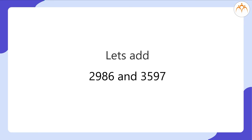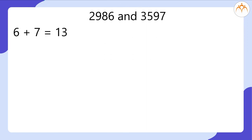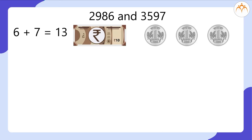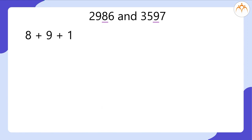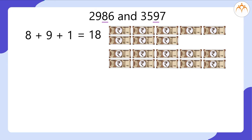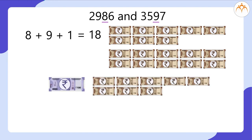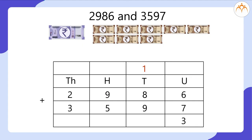Let's add 2,986 and 3,597. 6 plus 7 equals 13. So we exchange 13 rupees for 1 note of 10 and 3 coins of 1 rupee. We write 3 in the units place and this 1 note of 10 is the carryover to the 10s place. Now we have 8 plus 9 plus 1 equals 18 notes of 10 rupees each. We exchange for 1 note of 100 rupees and 8 notes of 10 rupees. We write 8 in the 10s place and this 1 note of 100 rupees is the carryover to the 100s place.